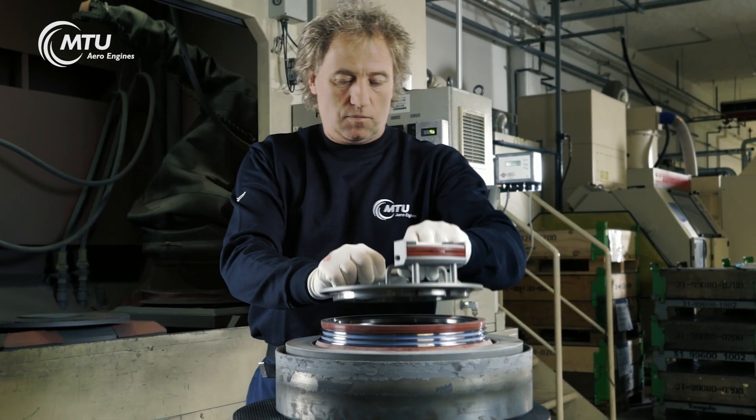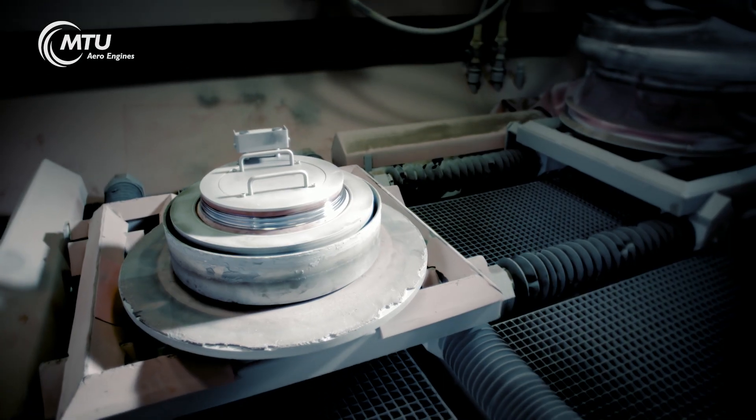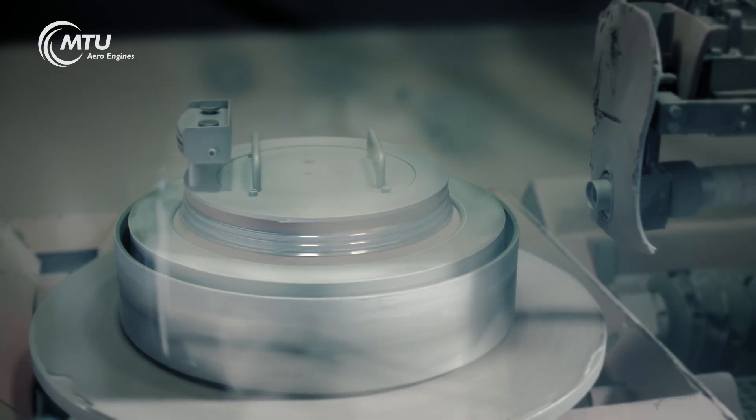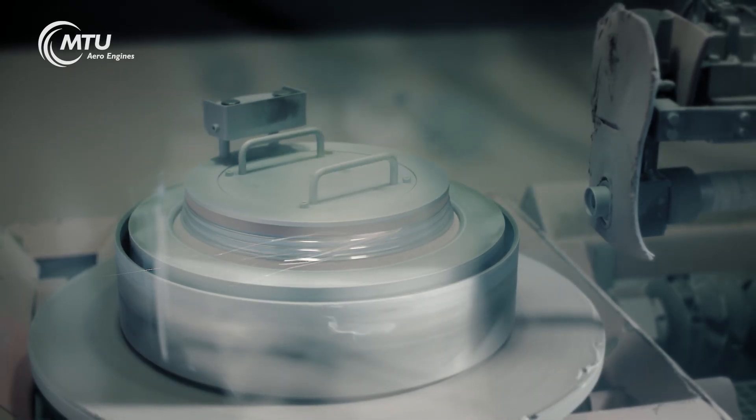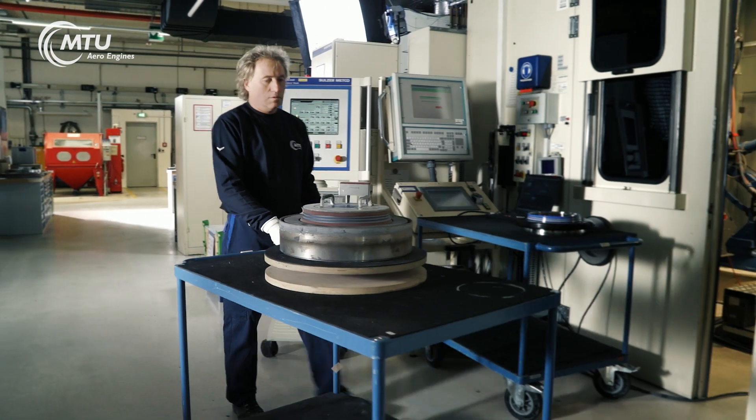One thermal spraying process is plasma spray. Masking defines the areas to be coated so that the particles to be applied adhere to the component. It is cleaned first.